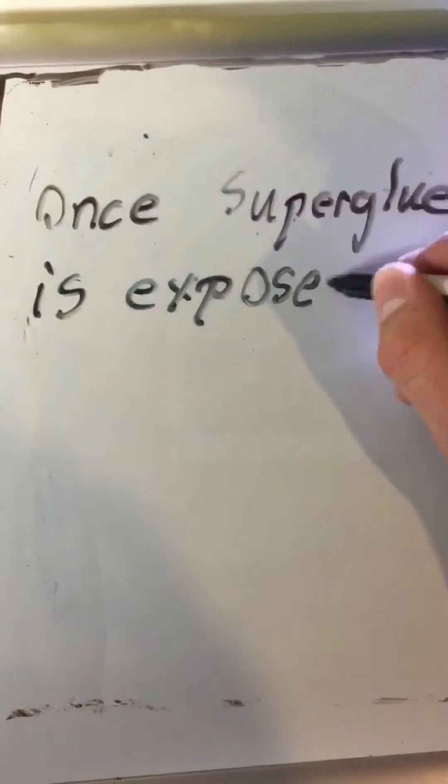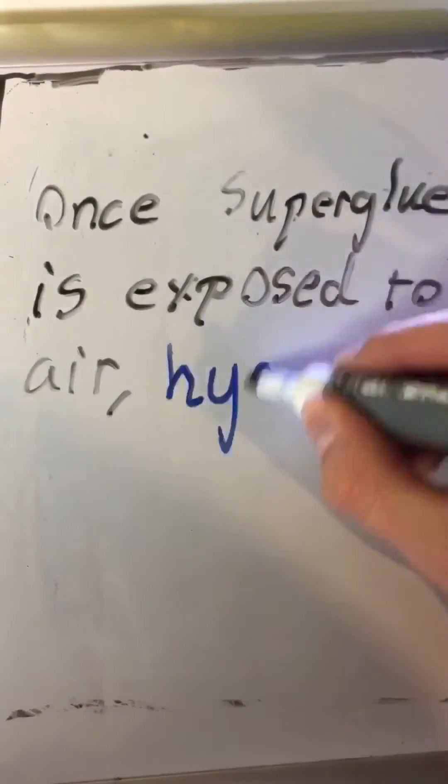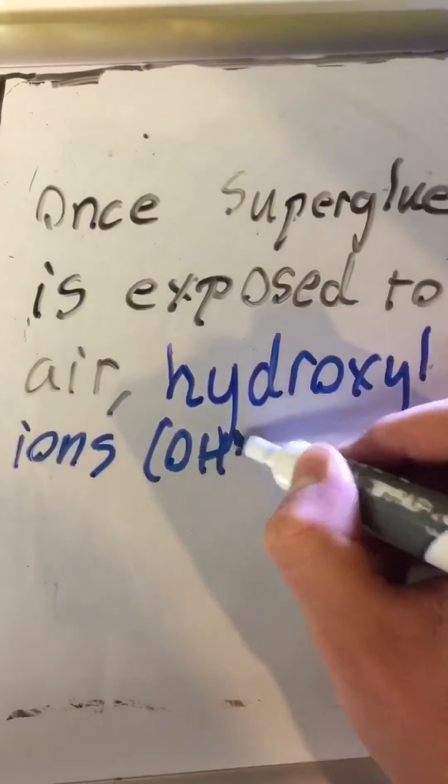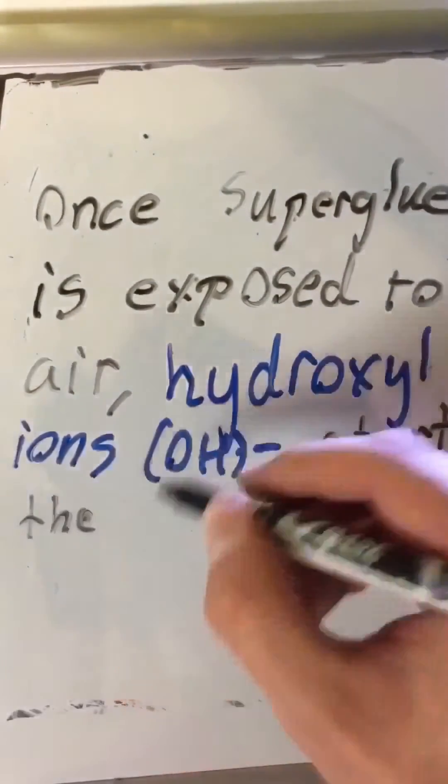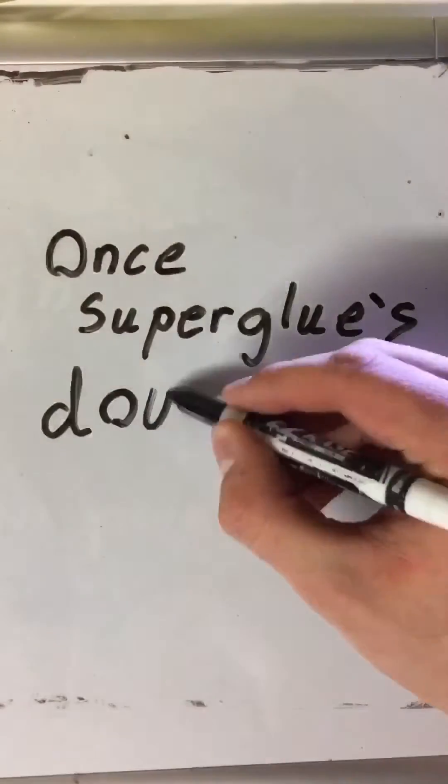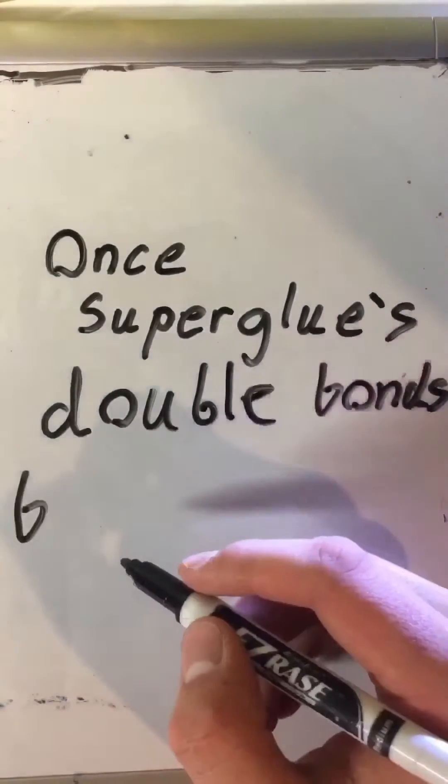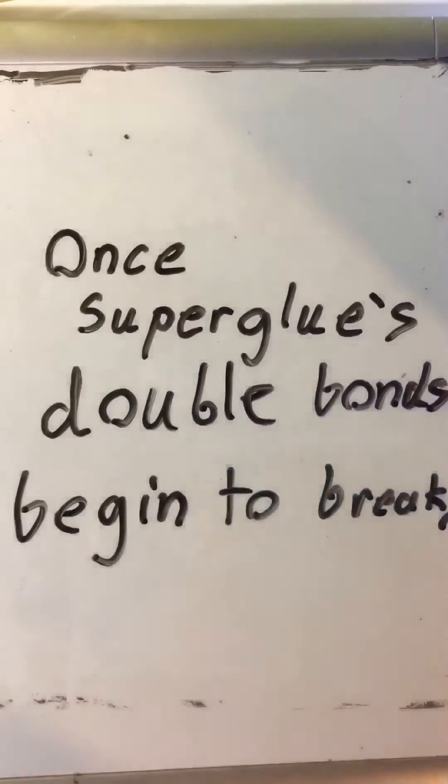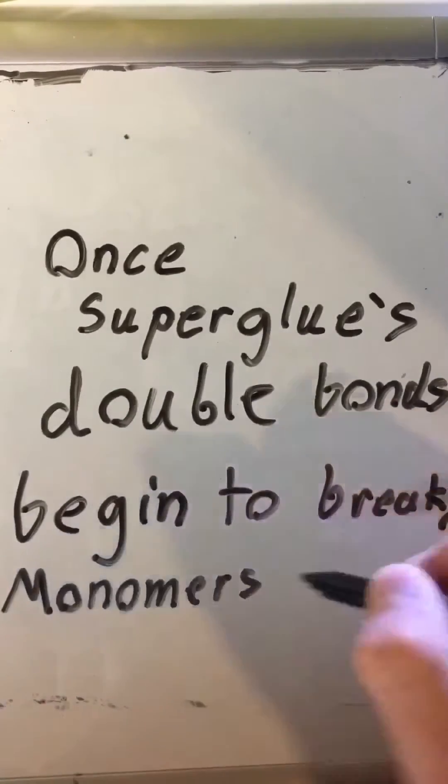Once super glue is exposed to air, hydroxyl ions found in moisture in the air start the monomers to turn into polymers. Now, once this chain reaction started, because of a double bond in cyanoacrylate, all the monomers will begin to want to join into the polymers.